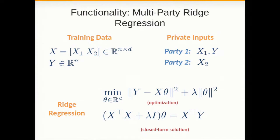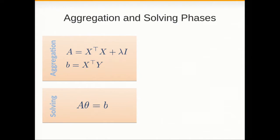This gives us a very nice split of the problem where we have an aggregation phase where the parties compute a matrix A and a vector b, and a solving phase where they solve this system of equations and obtain the parameters of the model theta. It's important to remark that the input for the aggregation phase depends on both the number of records which is of the order of millions and the number of features which is of the order of hundreds.